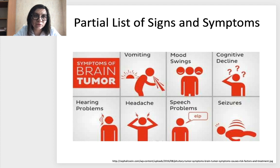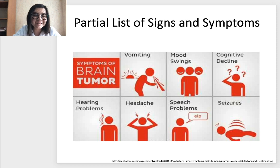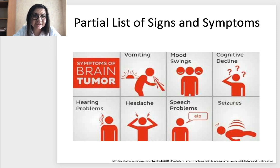Symptoms of brain tumors include headaches and loss of vision. Dangerous symptoms when you should send a patient to investigation for brain tumor include: unexplained central vomiting, unexplained mood swings, cognitive decline, hearing problems, headaches, speech problems, and seizures.